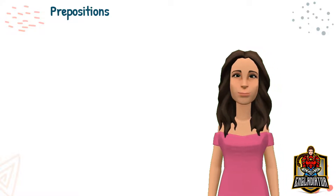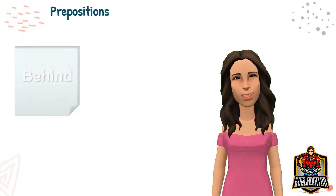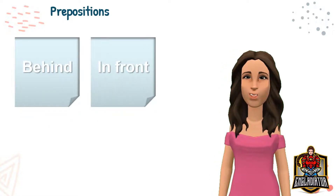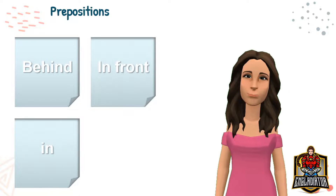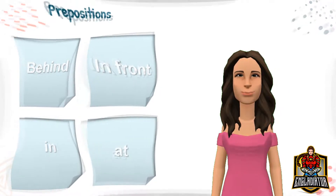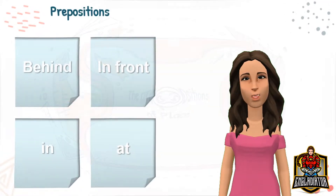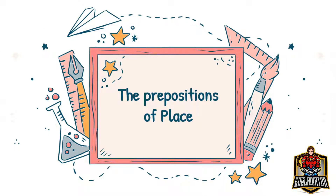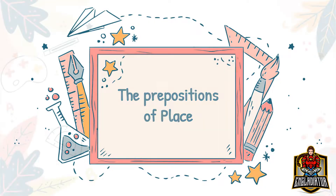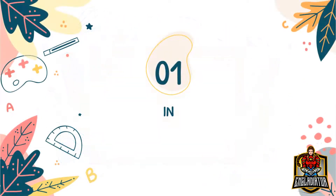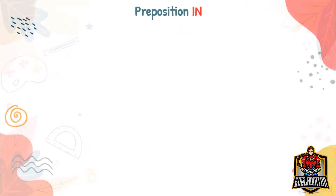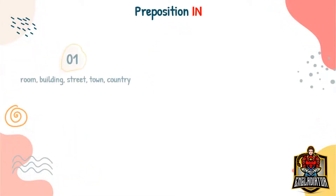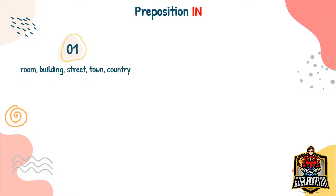When monsters are approaching, it's good to have these special words to tell us where those monsters are. Are they behind us or in front of us? Will they be arriving in three seconds or at night? In today's video, we're going to explain the prepositions of place. First, let us start with the preposition 'in.'